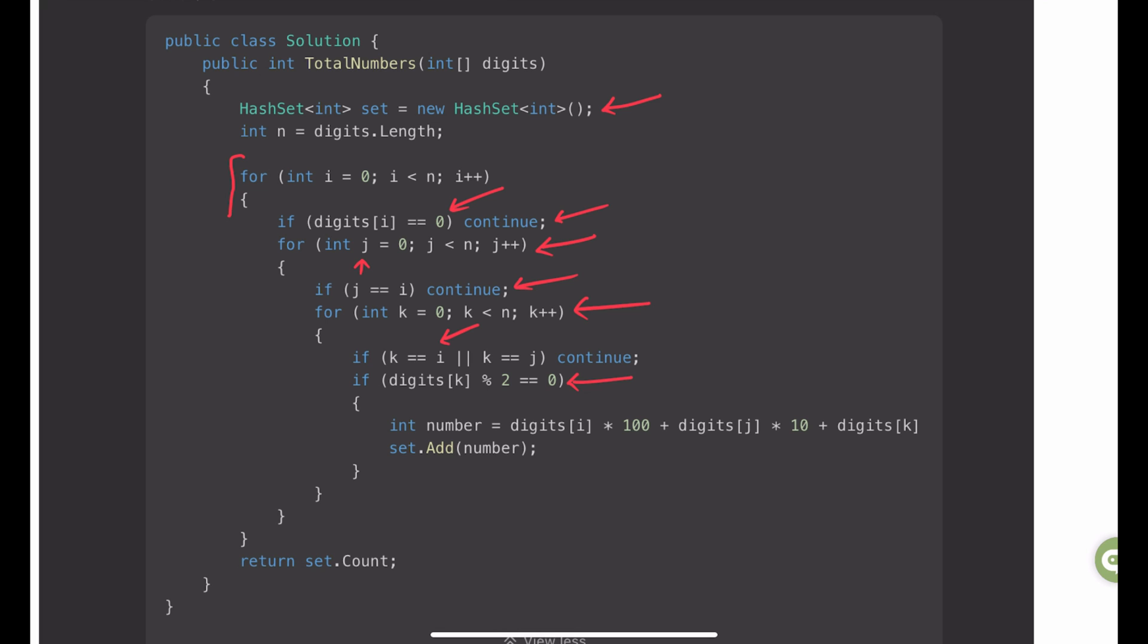I am then checking if the digit that k is pointing, is it an even number. If it is even, then I am building my number and saving that number to the set. Once all of these nested iterations are done, I am returning the count of the set.